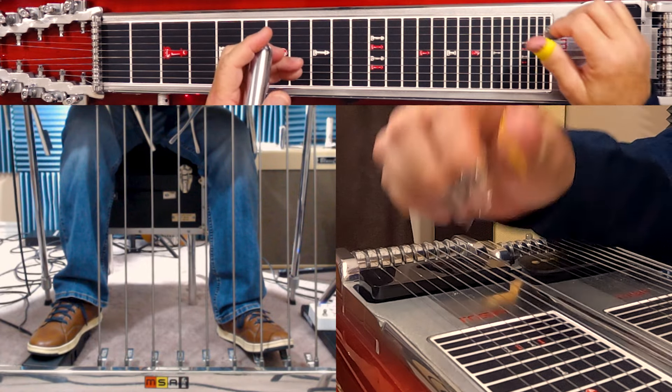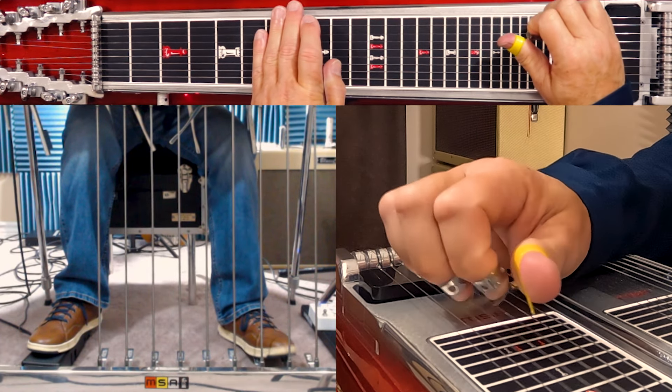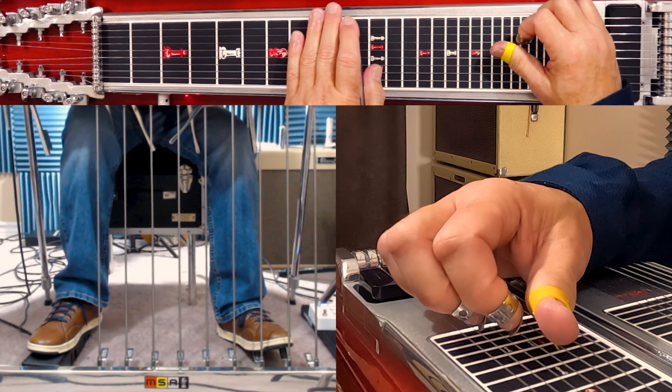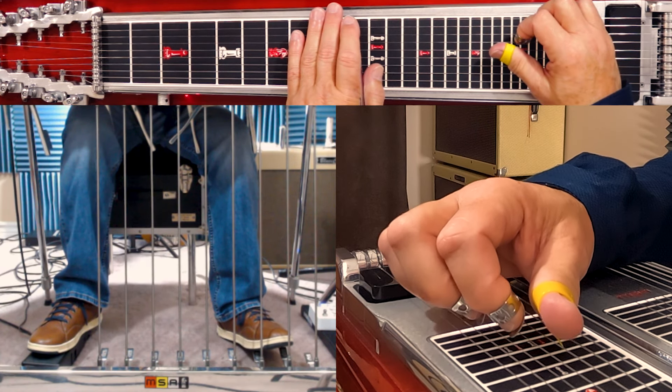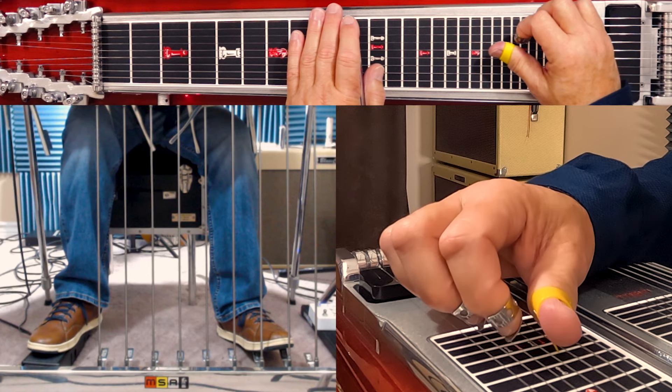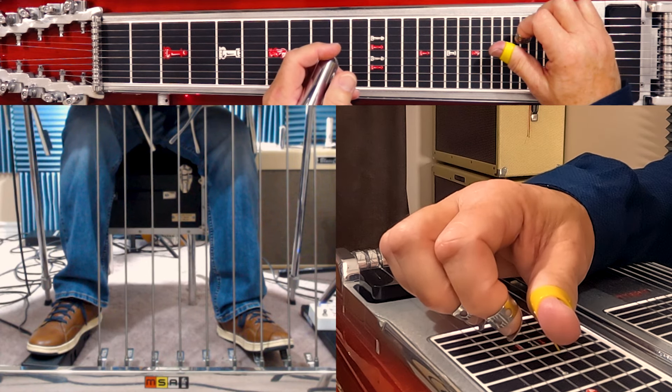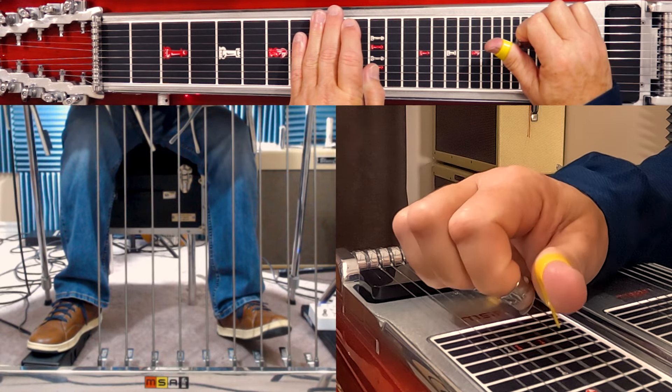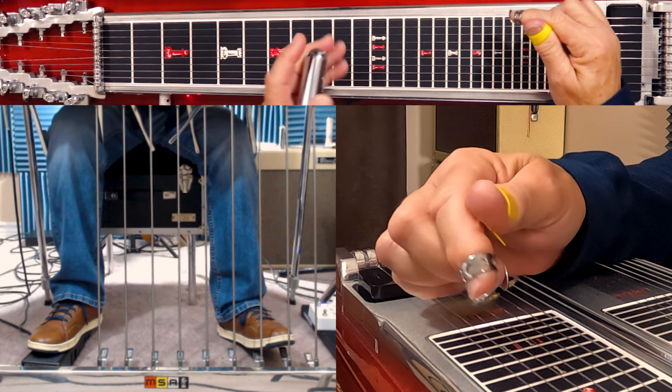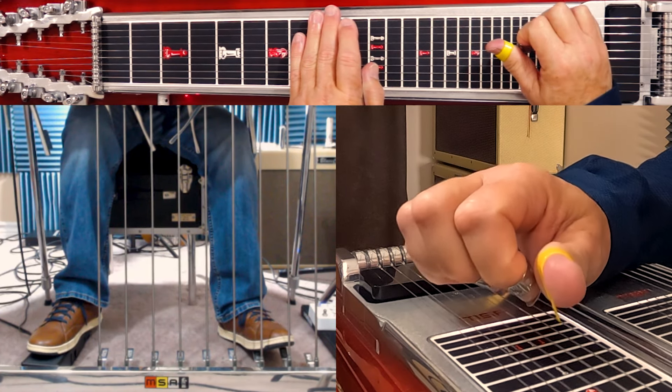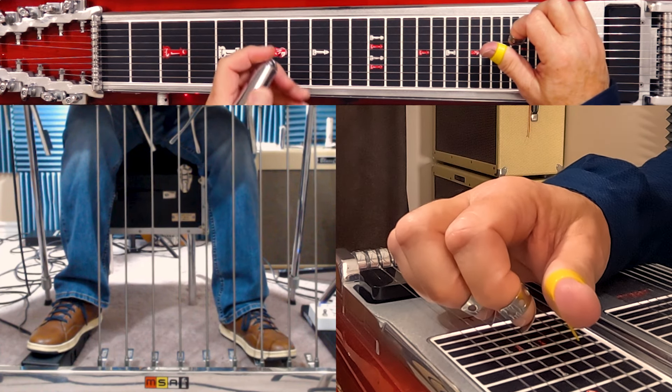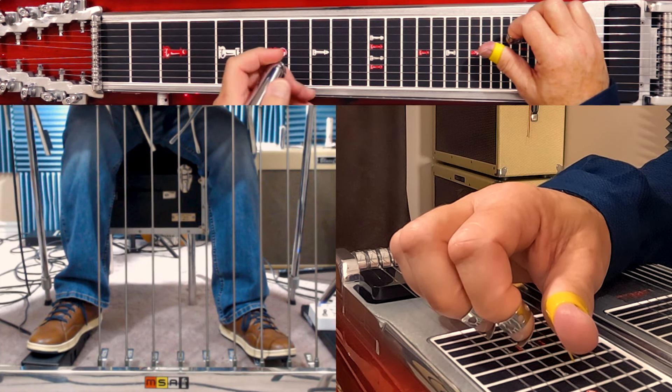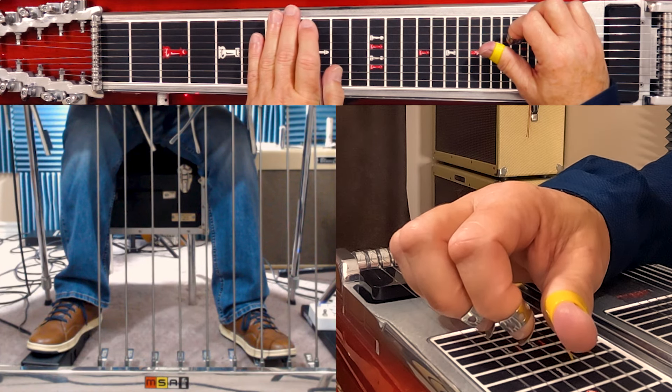So we have ED flat knee lever down. Play three, four, five. And then press A and B. Then release A and B. Leave the knee lever down. Go back two frets. A and B down. ED flat knee lever still engaged. Pedals down, then release.